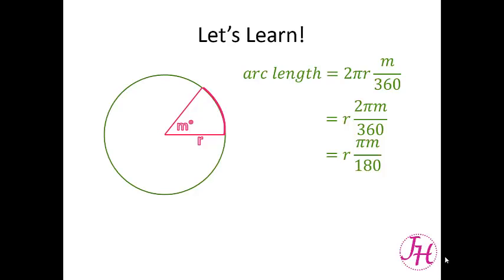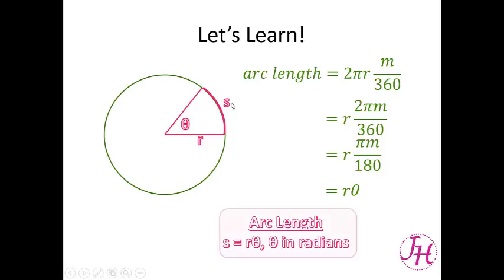Now remember, when we convert degrees to radians we multiply the number of degrees by π over 180. So essentially we are converting this angle measurement from degrees into radians. That becomes θ, where θ is the angle measure in radians. Our arc length is s = rθ, where r is the radius and θ is the angle measure using radians as the unit of measurement.